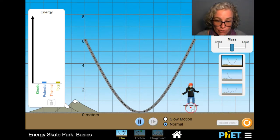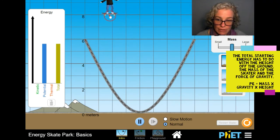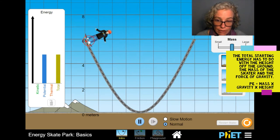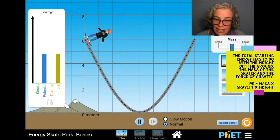So if I start over, you see that the total starting energy really has to do with how high the skater is off the ground. But as long as I start her at six meters above the ground, the total energy is going to stay the same in the system because energy cannot be created or destroyed, only transferred.